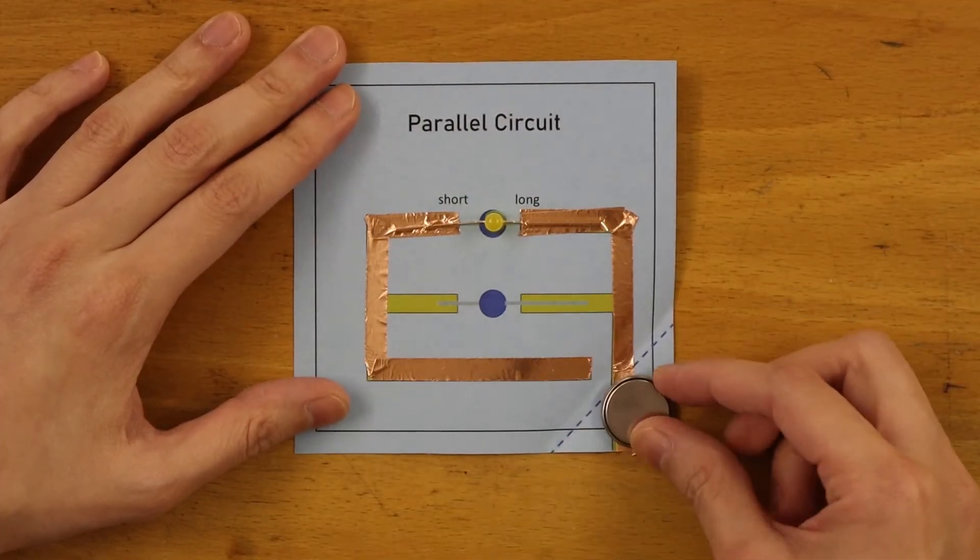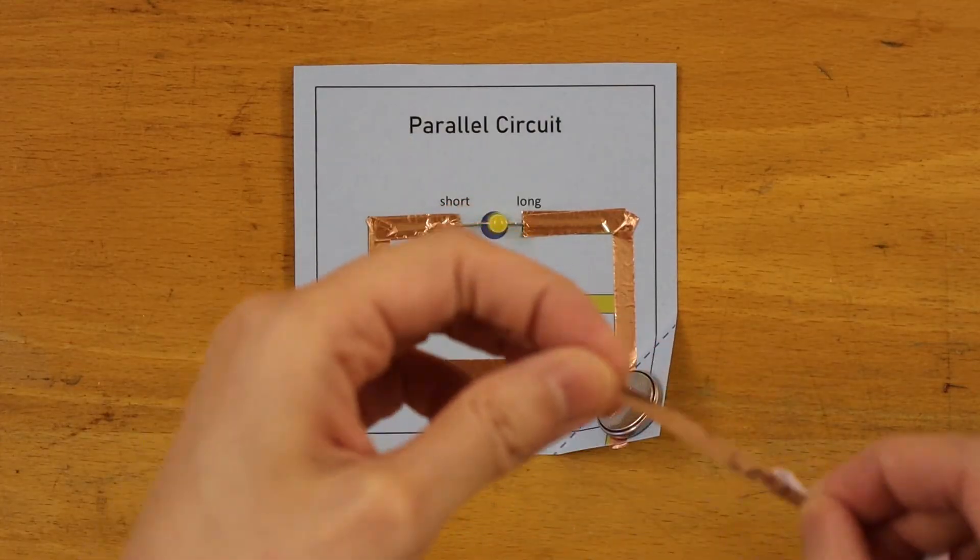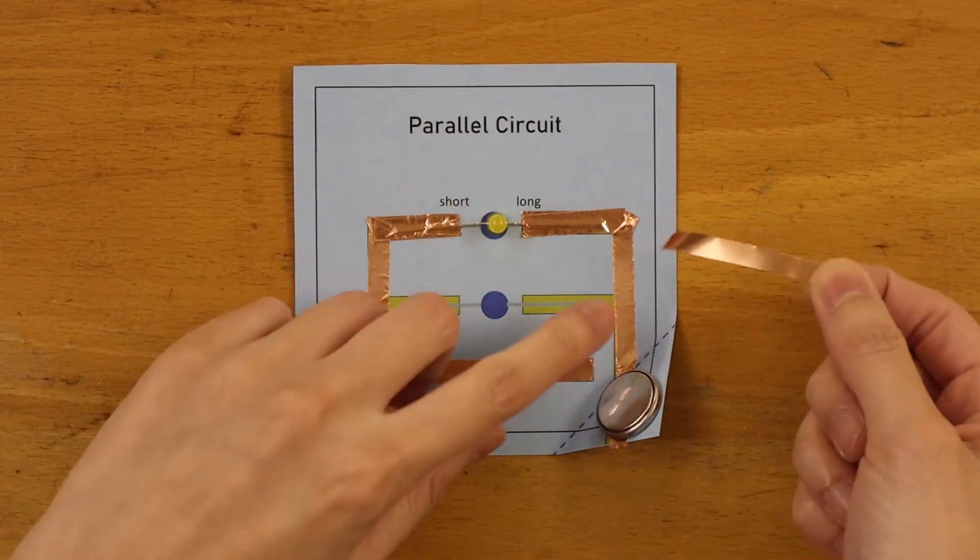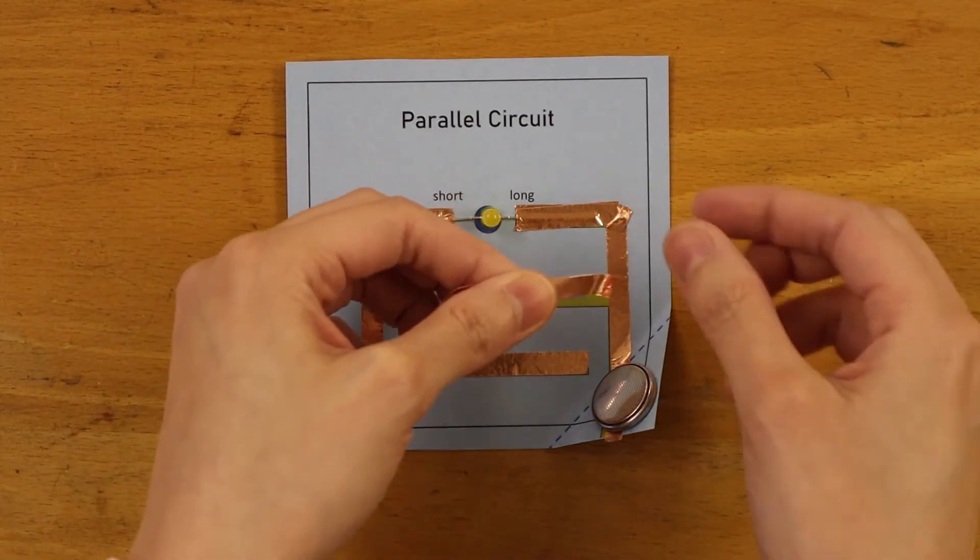Right now I just have one loop and I want to turn it into a parallel circuit. When making this new branch in my paper circuit, remember to overlap the copper tape with the outer loop.